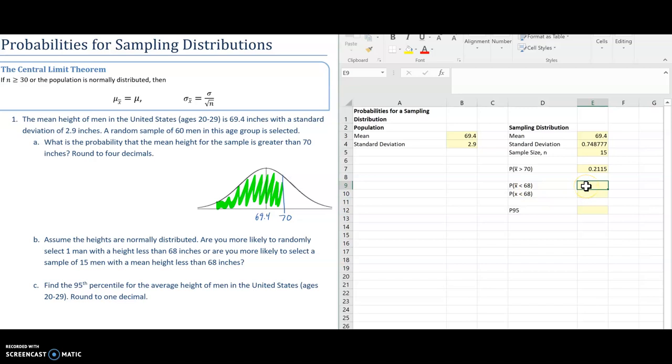So I'm going to do the same thing as before. This is a less than, so I don't need the 1 minus. So norm.dist. And I'm going to do 68, mean, standard deviation, which is now different from the previous one, and 1. So I got a probability of 0.0308 for that.